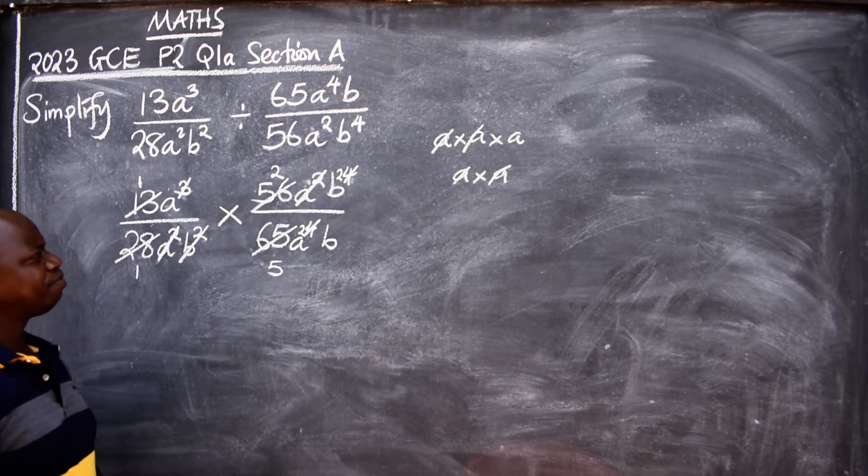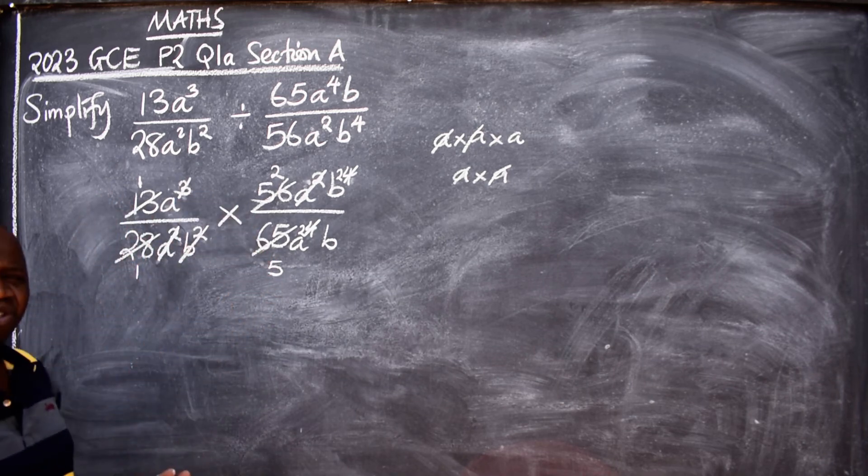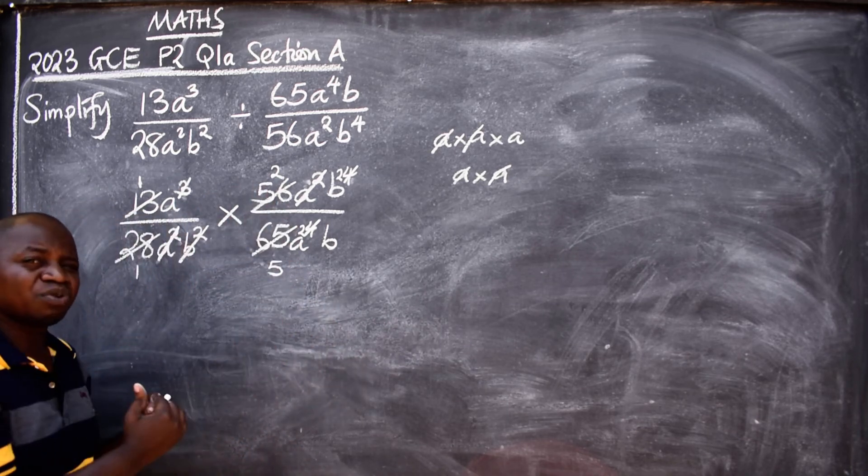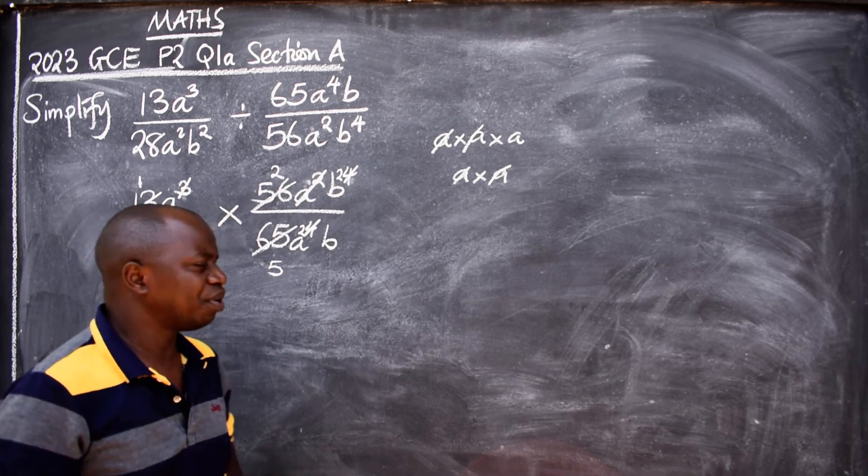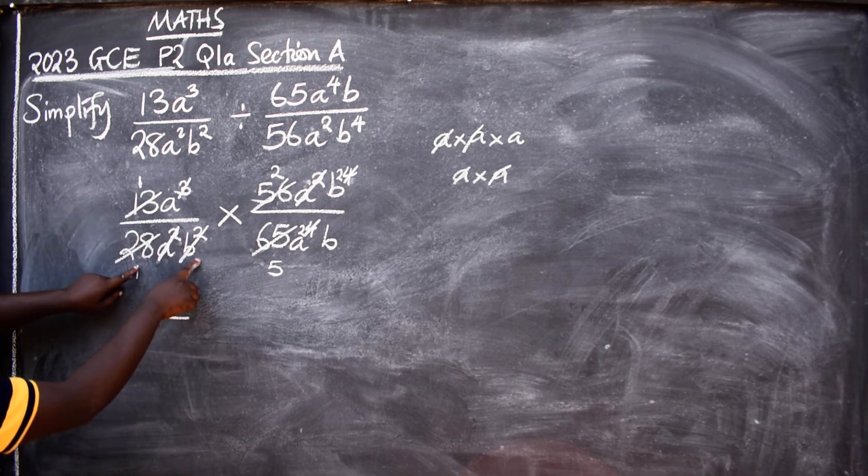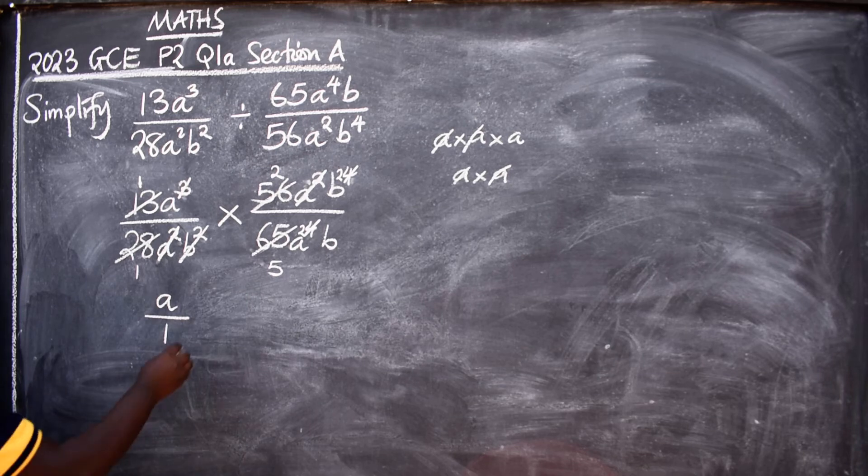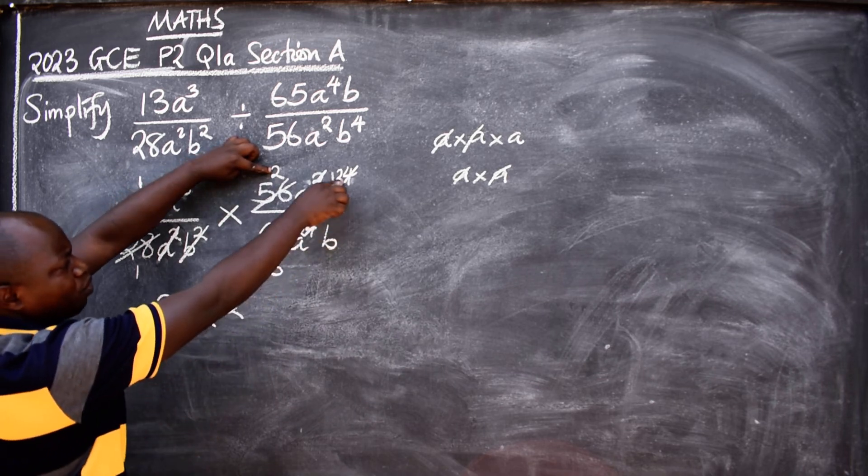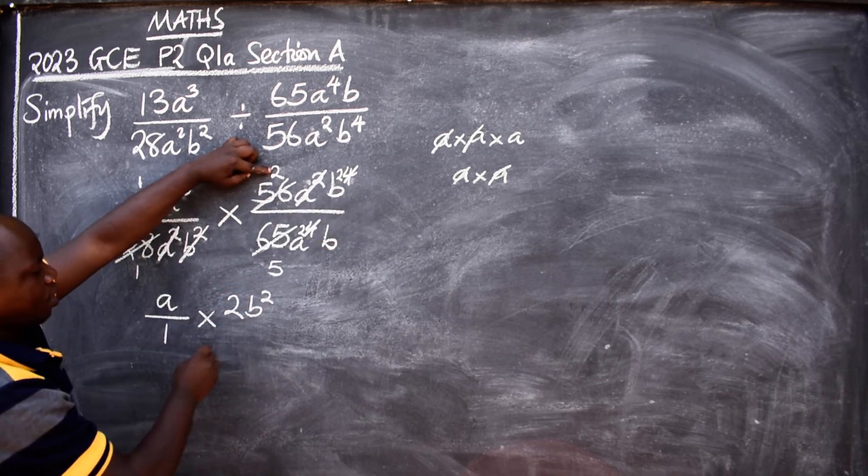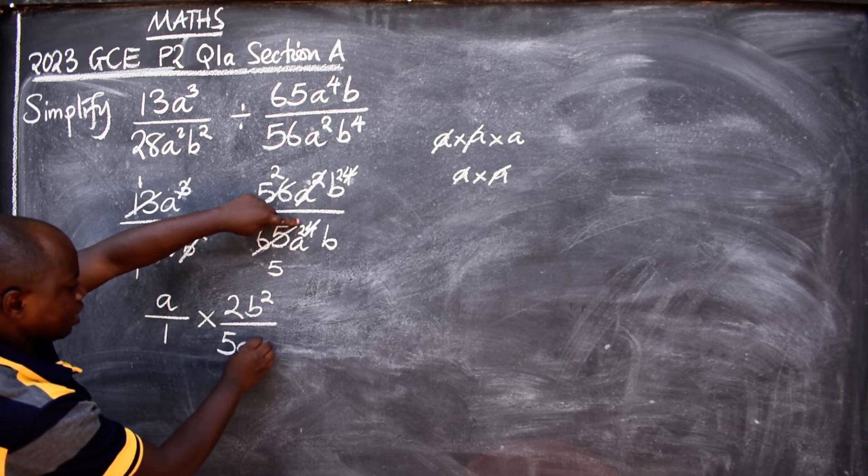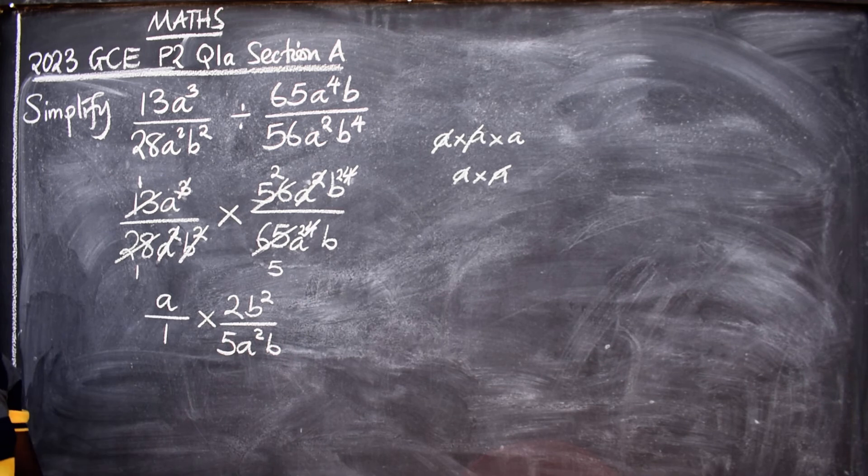At that stage, there are a lot that can be cancelled, but it's better you go to the next stage so that you see what has remained. What has remained here? On top I've remained with A over 1, times this side I've remained with 2 and B² over down here I've remained with 5, A², and B.